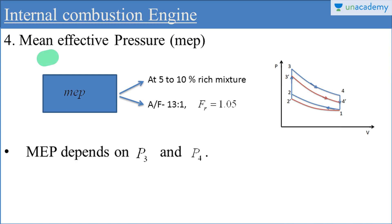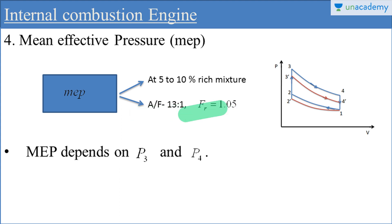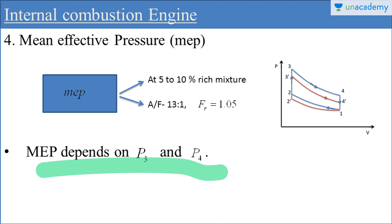The next point is mean effective pressure, or MEP. Mean effective pressure is maximum at a slightly rich mixture — specifically 5 to 10% richer than the chemically correct mixture. At that point, the air fuel ratio is 13:1 and the relative air fuel ratio FR is 1.05. Mean effective pressure depends on the maximum pressure and the exhaust pressure, and it also depends on the compression ratio — it increases with increasing compression ratio. If compression ratio increases, the efficiency of the cycle also increases.